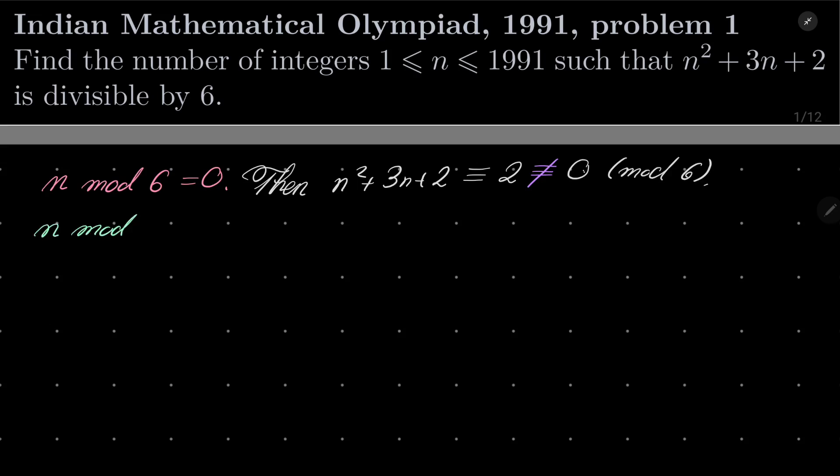n ≡ 1 (mod 6). Then n² + 3n + 2 is congruent to 1 + 3 + 2 = 6, and it is congruent to 0 modulo 6. Next case.